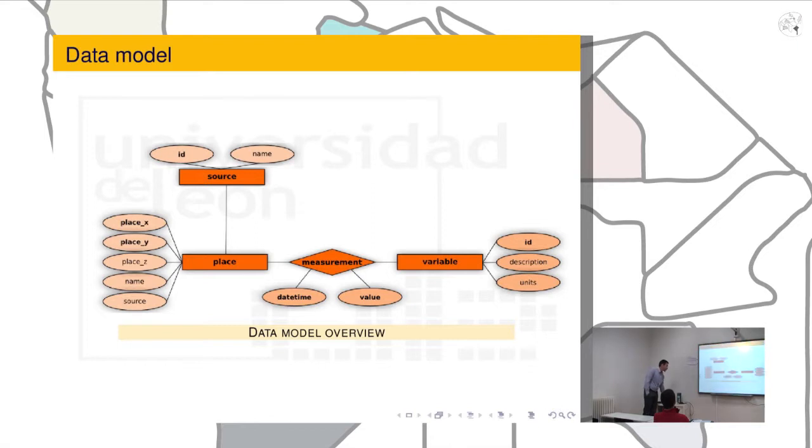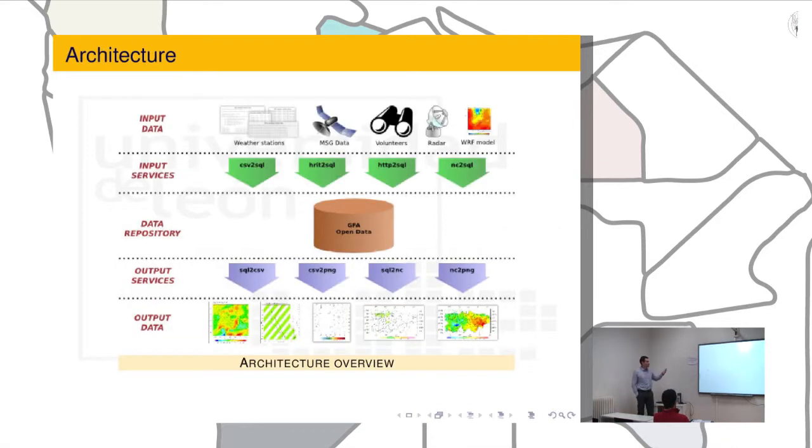Here is a slide which talks about the different sources that GFA Open Data are managed at present. At present, there are three sources of information in GFA Open Data. The first one has to do with official managed river basin bodies like Comisión Hidrológica del Duero, Comisión Hidrológica del Ebro, and Junta de Castilla y León. They have a lot of information, a lot of weather stations, and they offer their results to us.